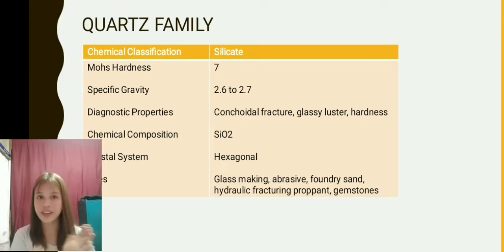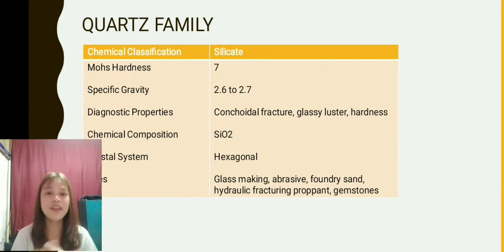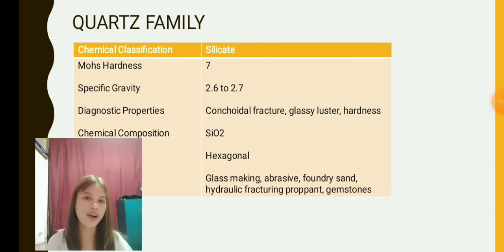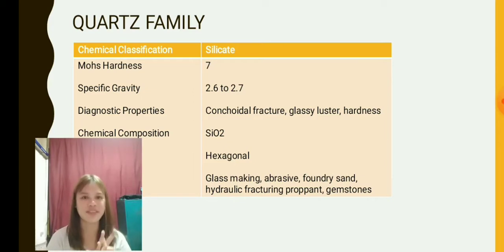The Mohs hardness scale is used as a convenient way to help identify minerals. The popular varieties of Quartz used as gems include amethyst, jasper, and rose quartz — those are examples of Quartz.